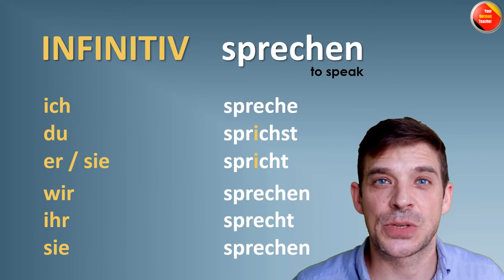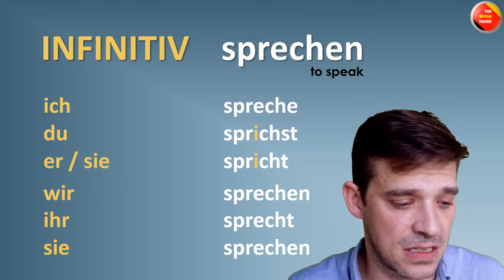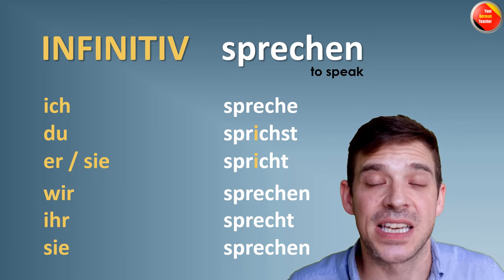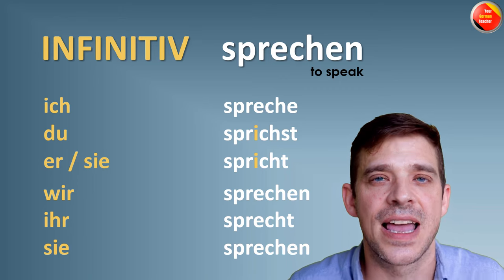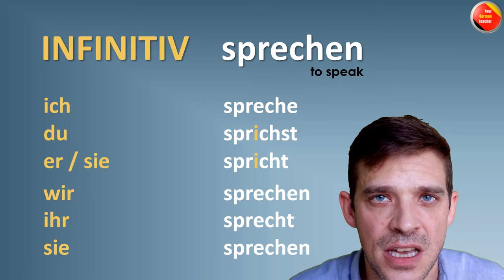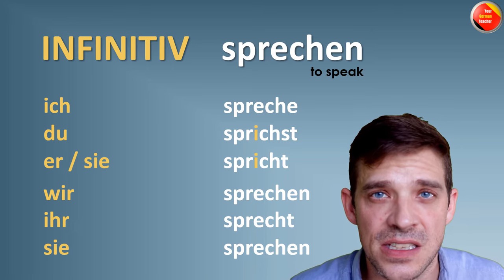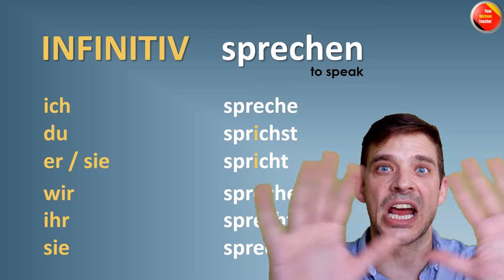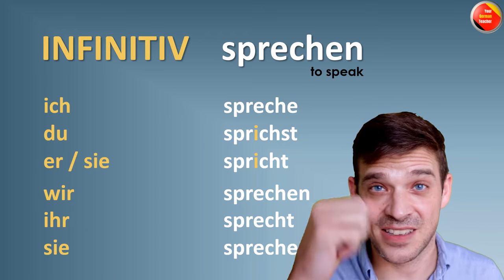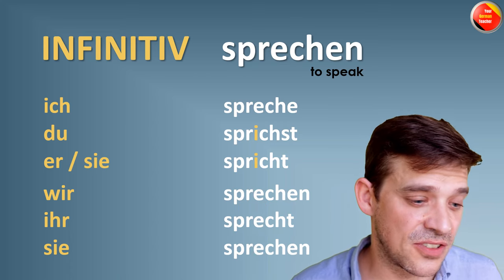The last verb is SPRECHEN — to speak. Conjugation: ich spreche, du sprichst, er/sie spricht, wir sprechen, ihr sprecht, sie sprechen. It's a difficult verb — there's the R, there's a CH — everything together. But it's quite important, so you need to know it.